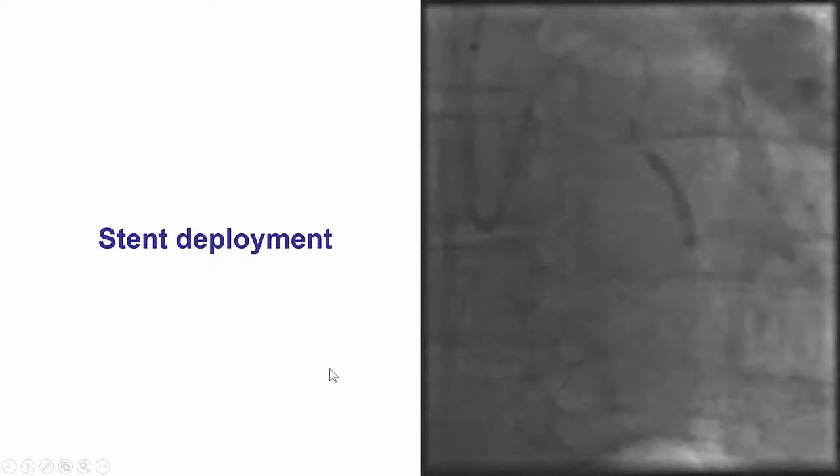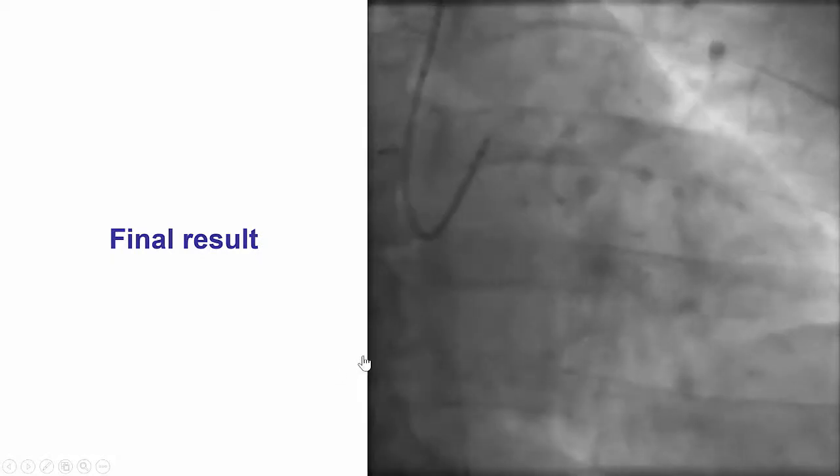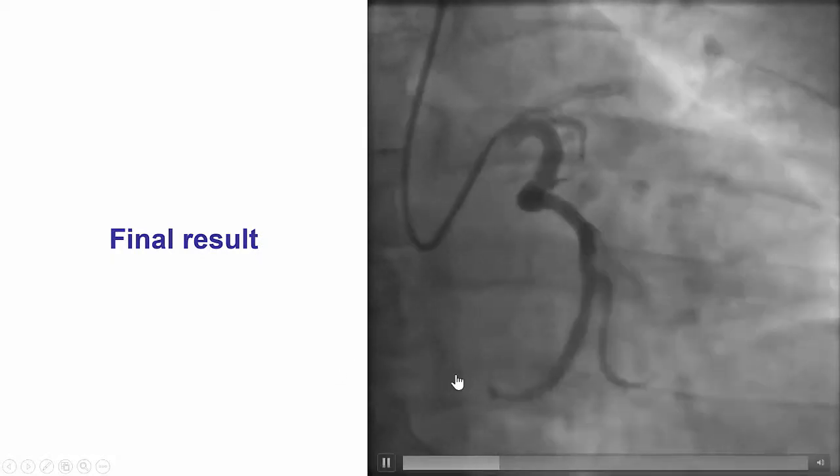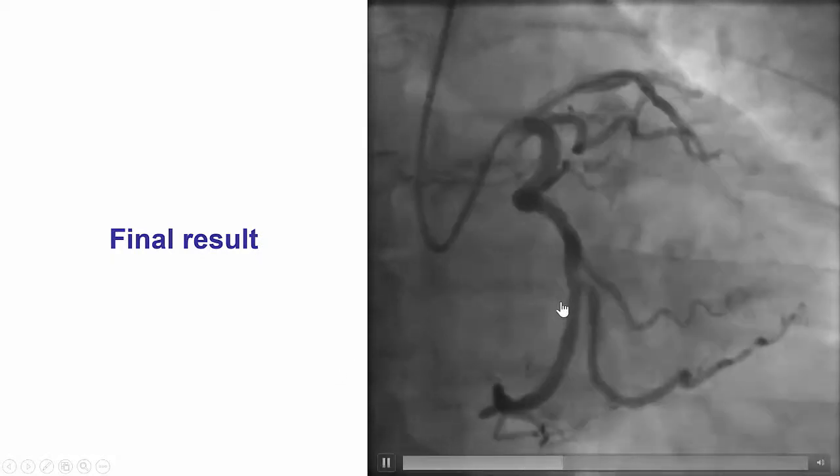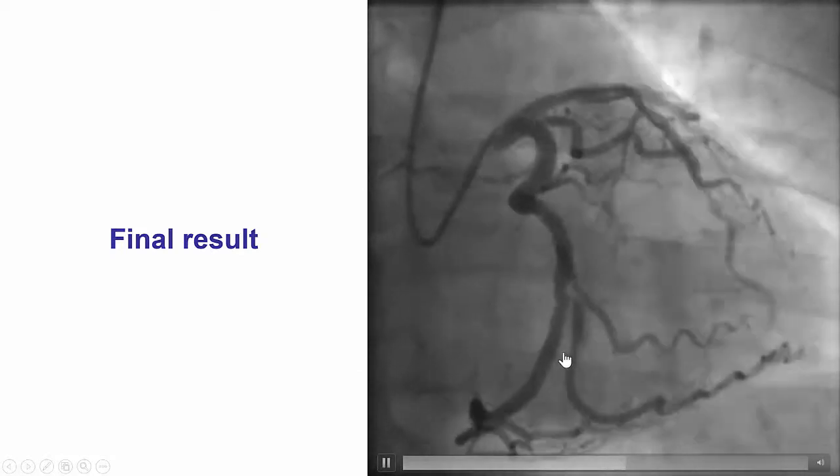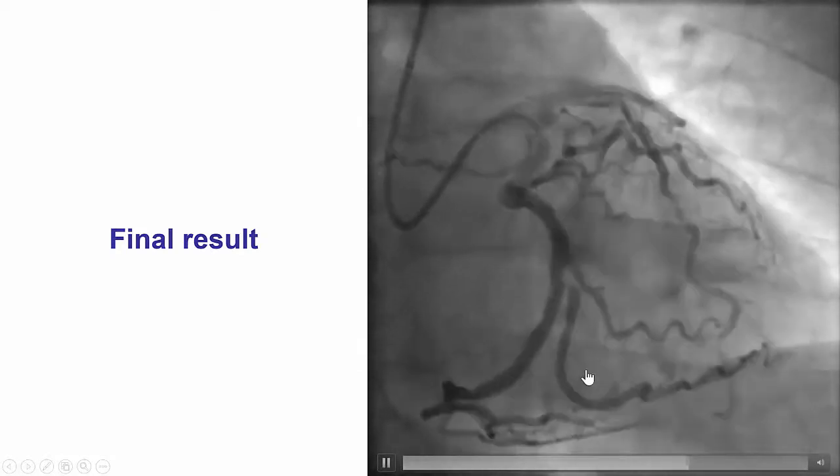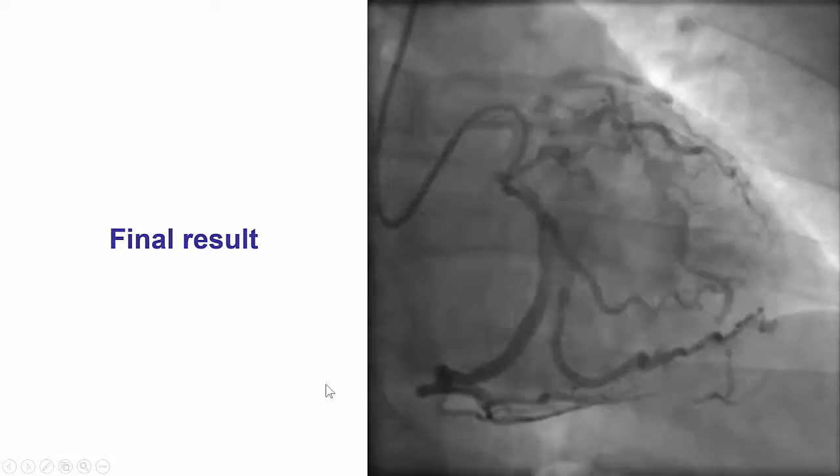After stent deployment, we had a nice angiographic result. Despite pinching of the ostia of both obtuse marginal branches, there was excellent TIMI 3 flow without significant lesions.